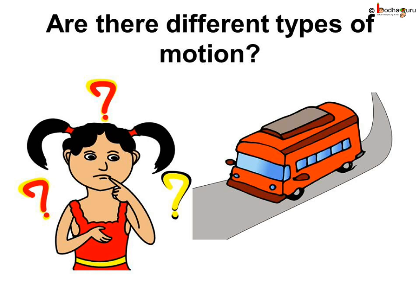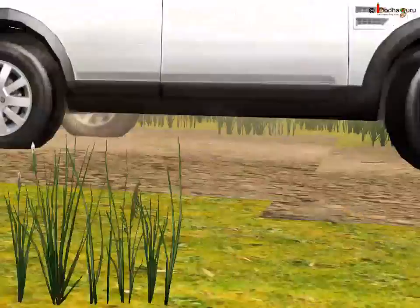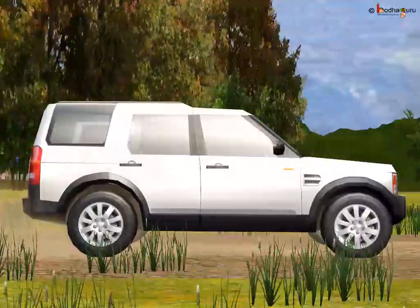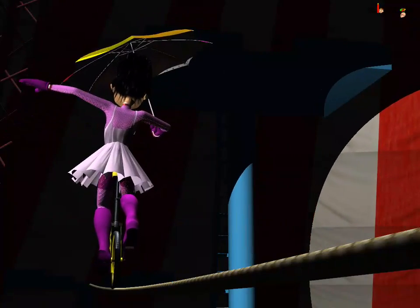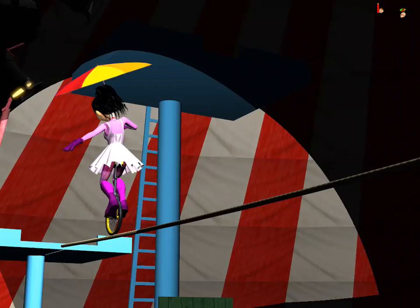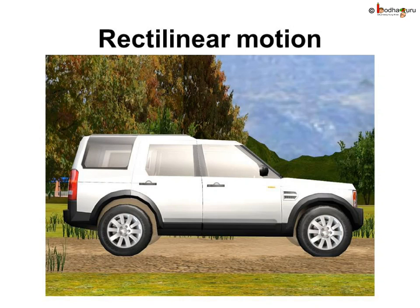But are all these motions similar to each other or do they differ? Yes, there are different types of motion and not all types of motion are the same. When a car moves on a straight road, its motion is in a straight line. Even a stone falling from a height follows a straight path. The artist cycling on a tightrope in the circus also moved in a straight line along the rope. When a body moves along a straight line, we call it linear or rectilinear motion.